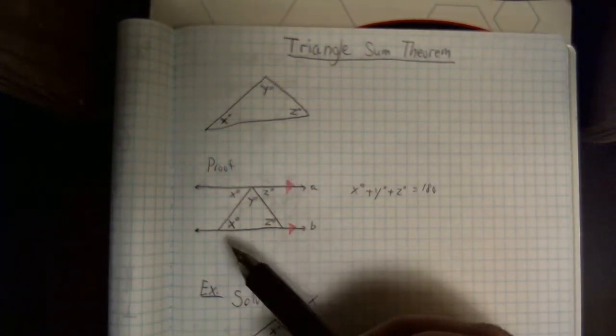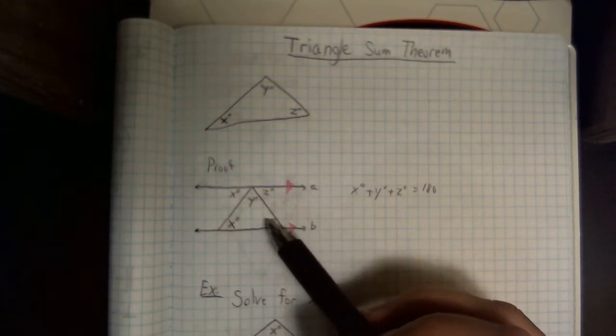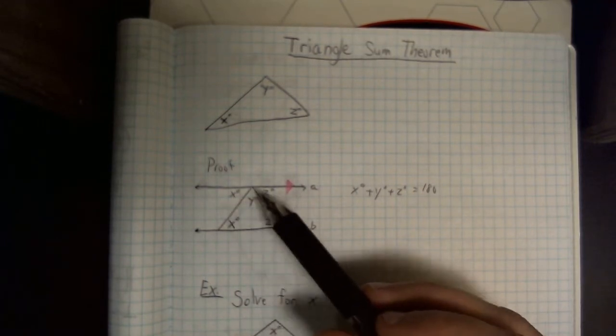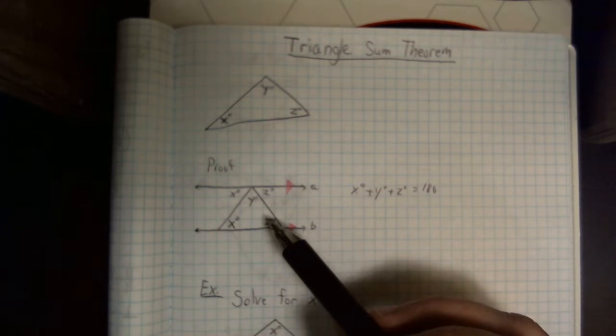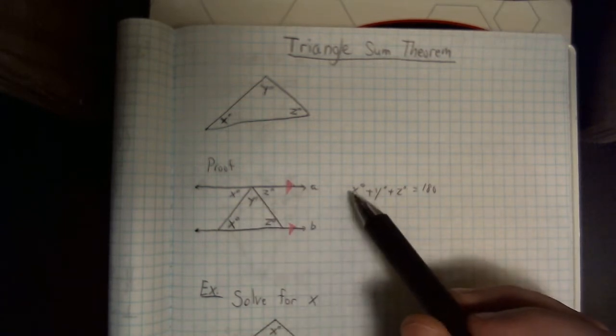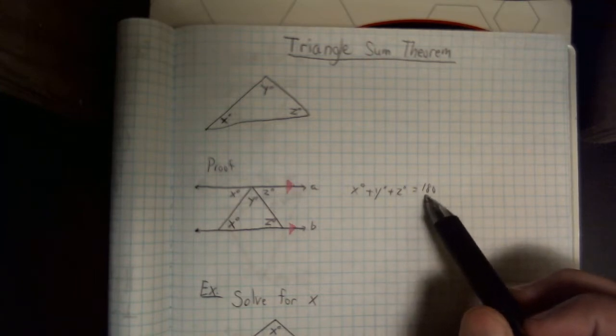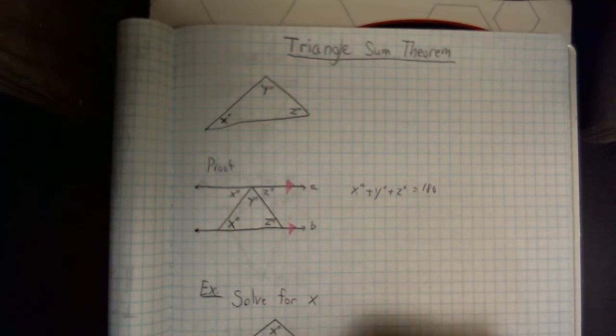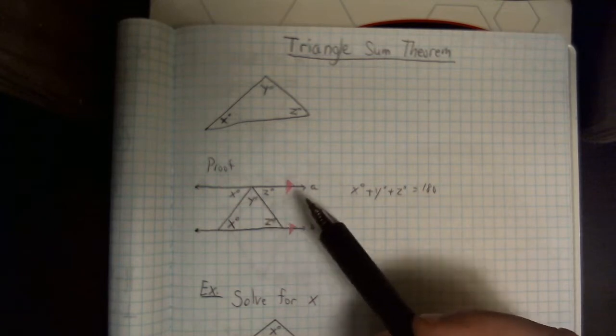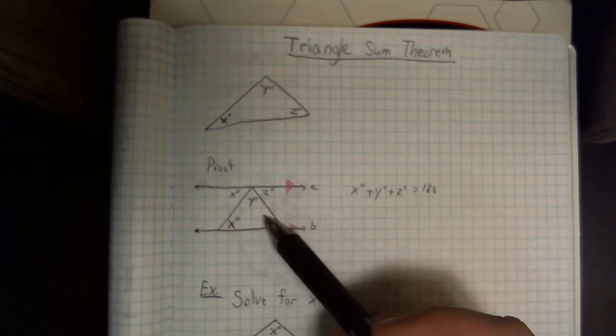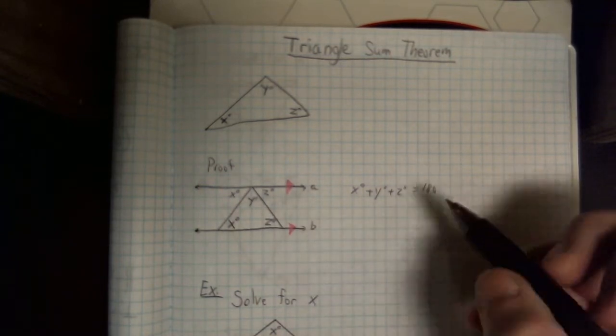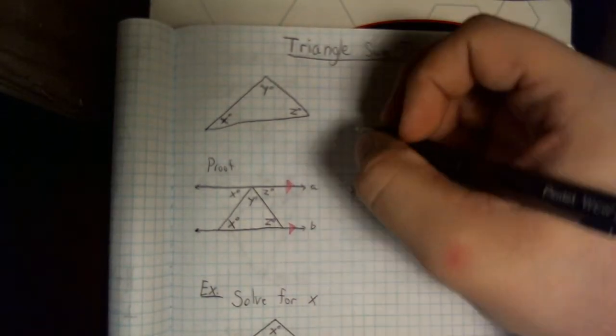Well, we still have x plus y plus z. We haven't changed the values, but we do know that now they're inside of that triangle. So if we add x plus y plus z, they're still going to add up to 180 degrees. So we had to use the alternate interior angle theorem to get there. But it still comes out to being the same thing. 180 degrees.